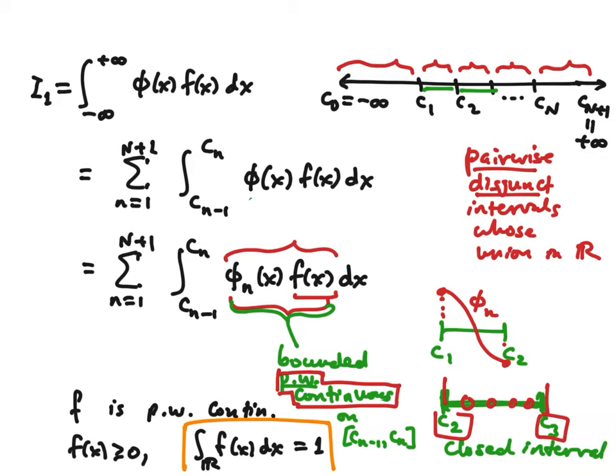This integrand is a very nice integrand. It has only a finite number of discontinuity points, all coming from f, on that interval. The interval itself is also a very nice interval — it's just a closed interval. So there's no problem with these integrals; they are perfectly meaningful and finite.